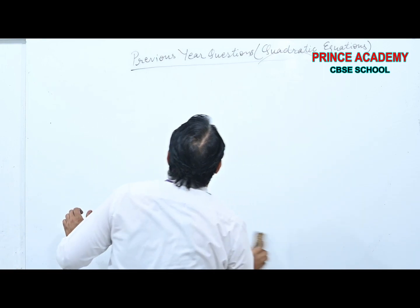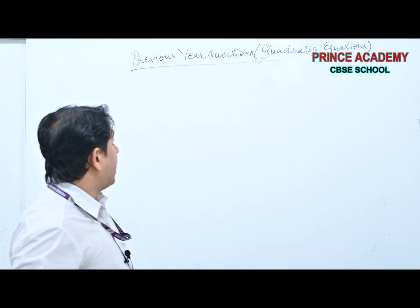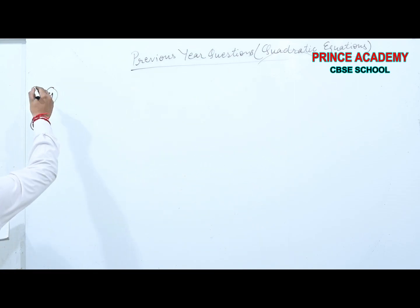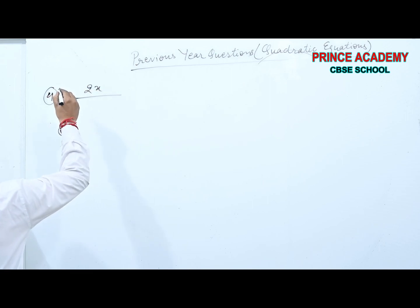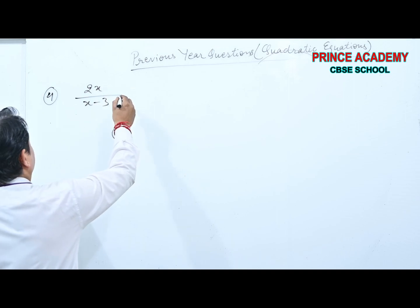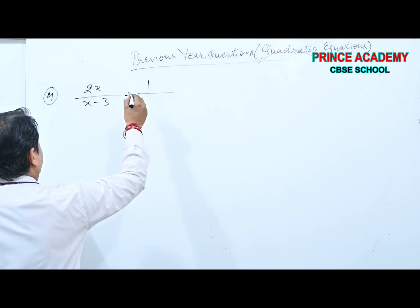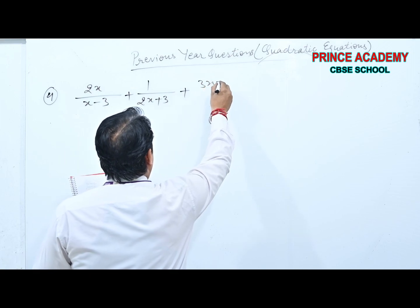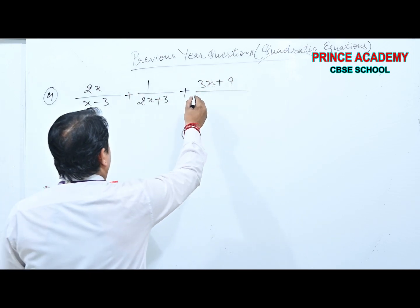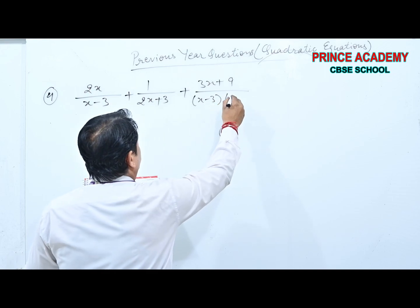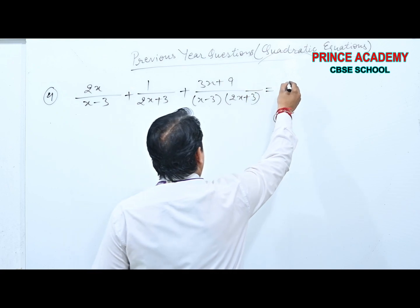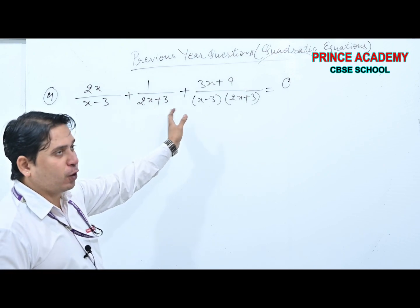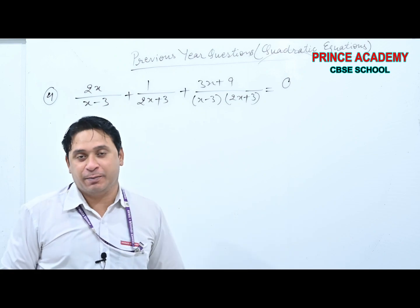One more question of this type. The next statement may look a bit complex, but you are capable students and should not be fearful. The statement: 2x/(2x+3) + (x−3)/(x) + ... = 0. We have to solve for x.